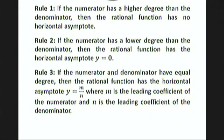To find the horizontal asymptotes of a rational function, there are three rules. Rule 1: if the numerator has a higher degree than the denominator, then the rational function has no horizontal asymptote. Rule 2: if the numerator has a lower degree than the denominator, then the horizontal asymptote is y equals 0, always. Rule 3: if the numerator and denominator have equal degree, then the horizontal asymptote is y equals m over n, where m is the leading coefficient of the numerator and n is the leading coefficient of the denominator.